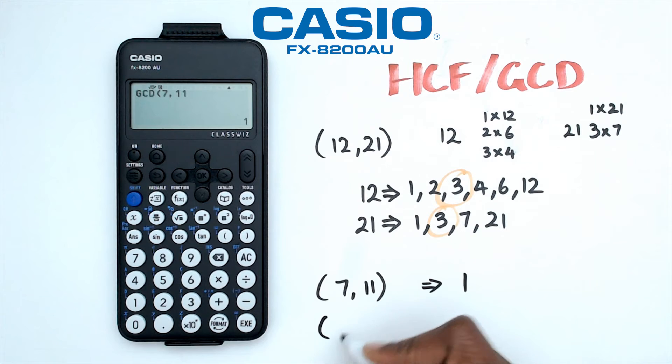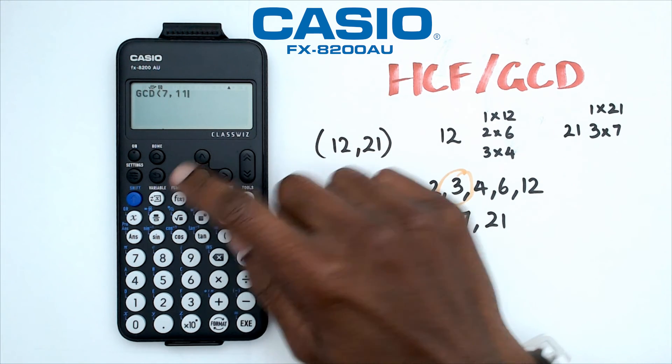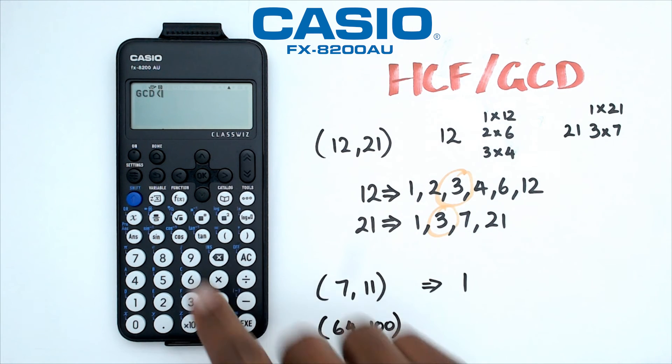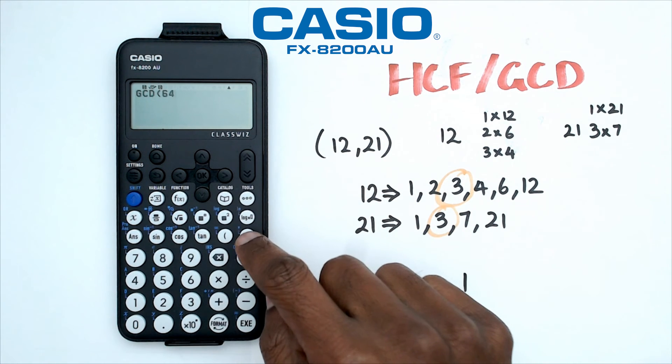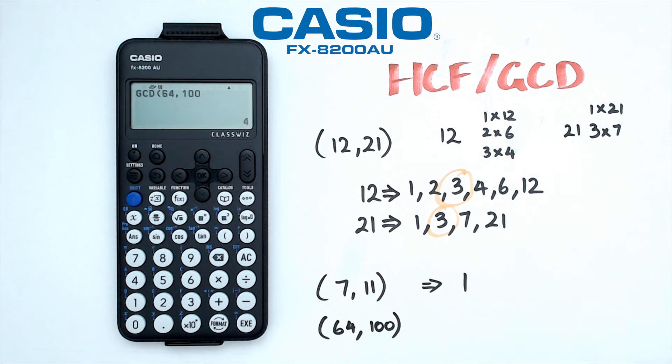Let's try one last example. This time let's put in 64 and 100. Now instead of doing this, going through the whole thing again, what I'm going to do is just go back and just delete these things with the delete button. And I'm going to put in 64 shift bracket that gives me the comma and 100. And when I do that, I get 64 and 100. The highest common factor or the greatest common divisor is 4.